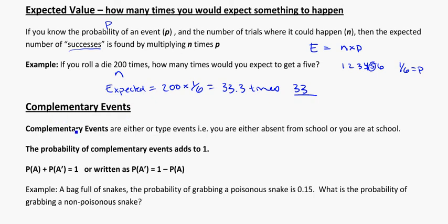Complementary events, another thing that you might see. These are events that are kind of either or type. So for instance, you're either absent from school, or you're not absent from school. You're either absent or present. The probability of complementary events add to one because they accommodate everything that's possible, either, for instance, being there or not being there.